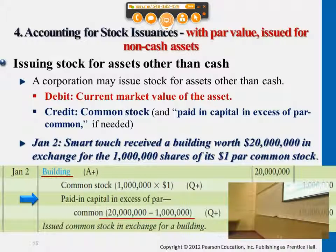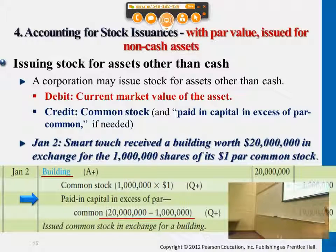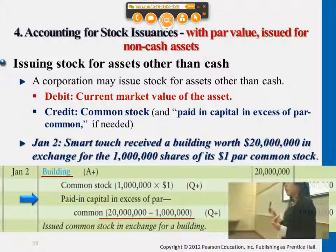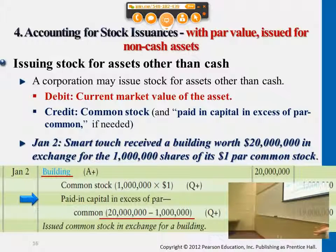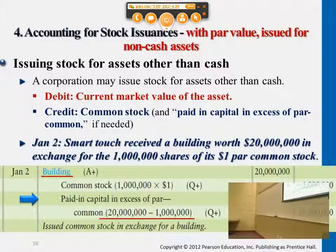For example, if SmartTouch company receives a building and exchanges common stock for a building worth $20 million, by issuing stock with a par value of $1 — we consider the difference between the value of the asset we are receiving compared to the face value of the stock, which is $1 million. That difference goes under the premium account. Here we're comparing the building's market value against the common stock's face value, and if there's a difference, it's considered a premium in this exchange transaction.